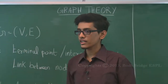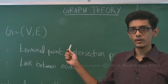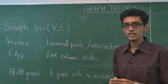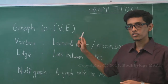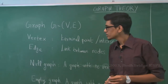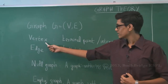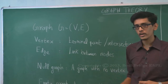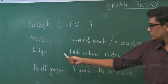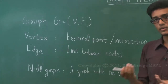A graph is defined as G = (V, E), where V is a set of vertices and E is a set of edges that connect the vertices. A vertex is defined as a terminal point or an intersection point, and an edge is defined as the link between nodes.